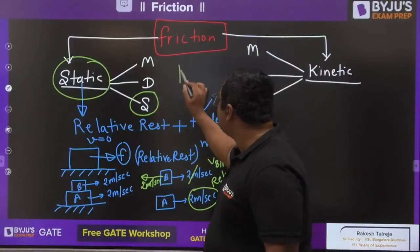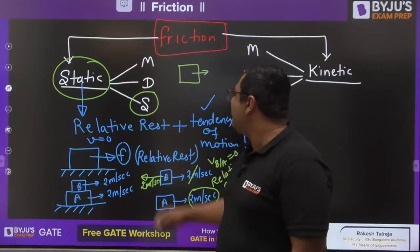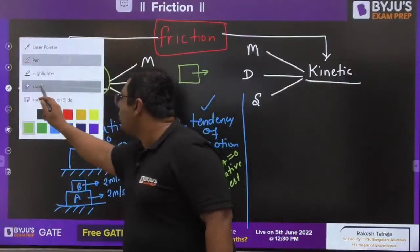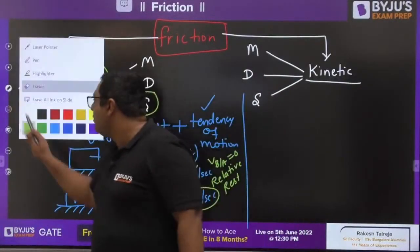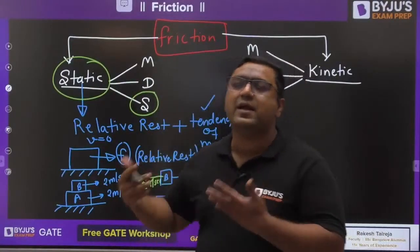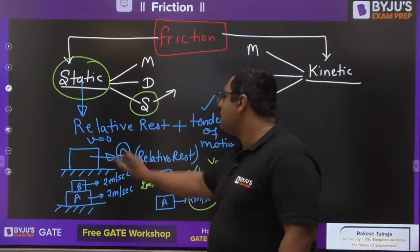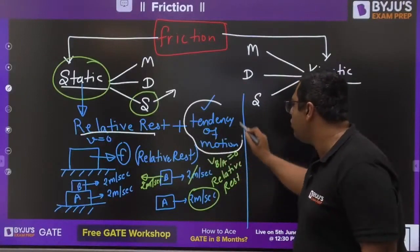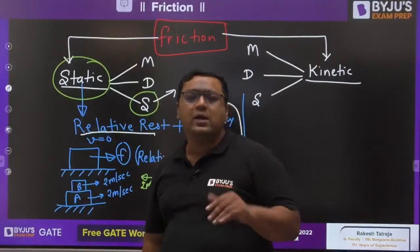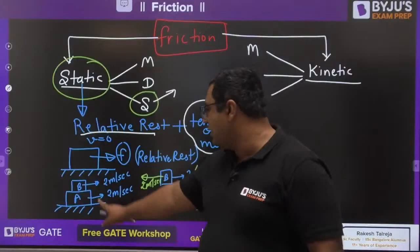Static friction acts when the condition is relative rest plus tendency of motion. Relative rest does not mean absolute rest is required — it means maybe two bodies are moving but at the same speed, so there is no relative motion between them. Relative rest means there is no relative motion between the two bodies.